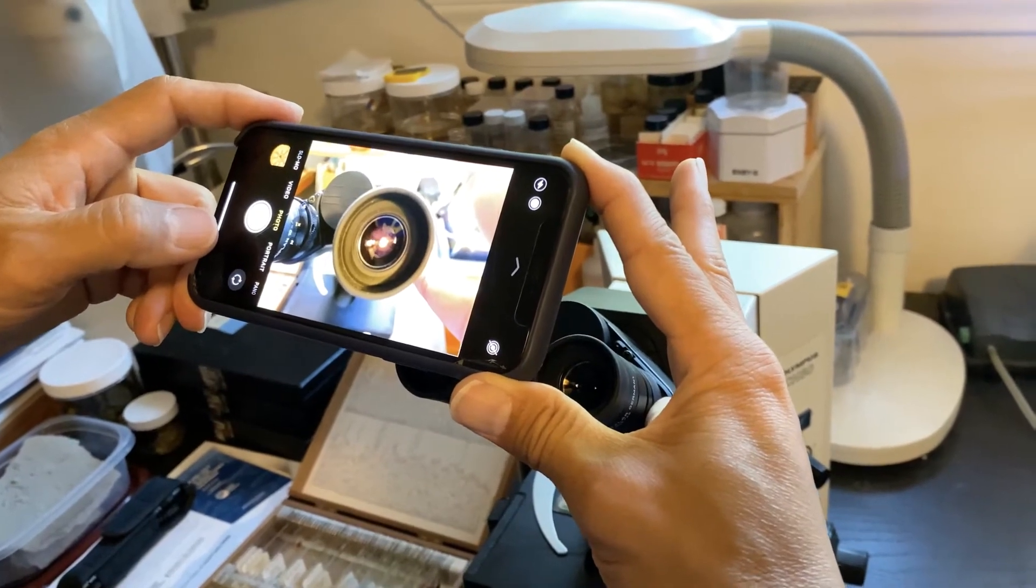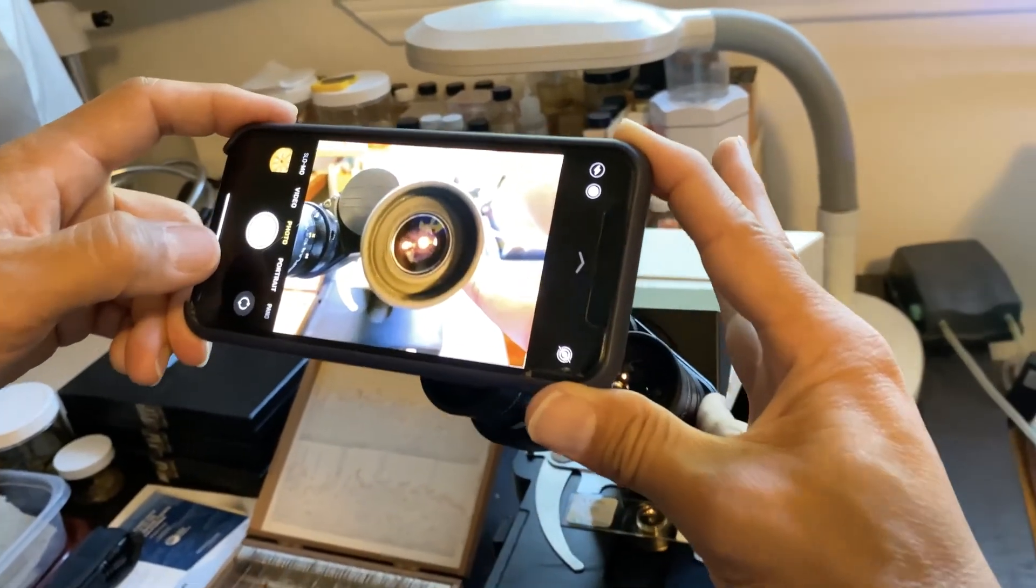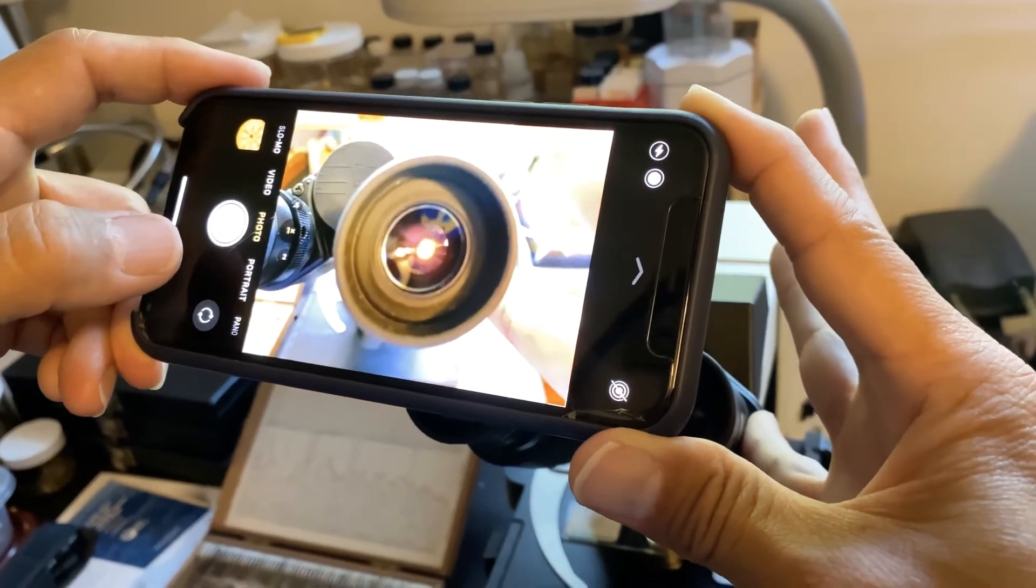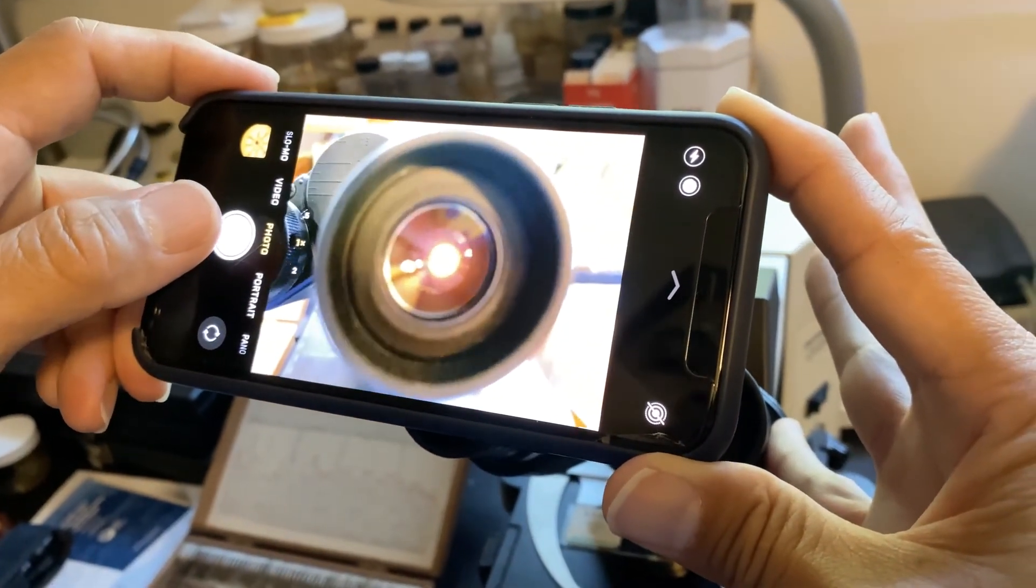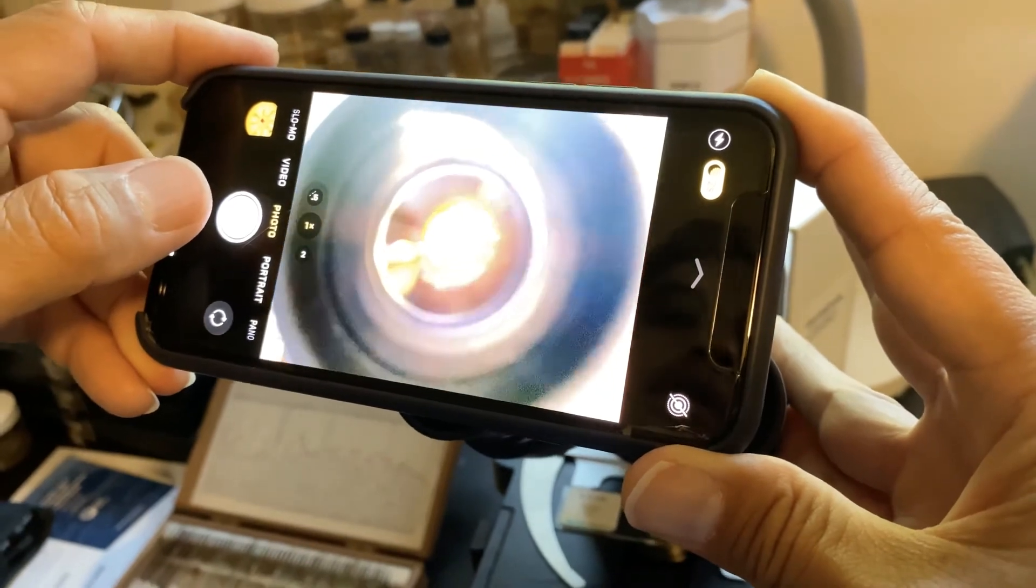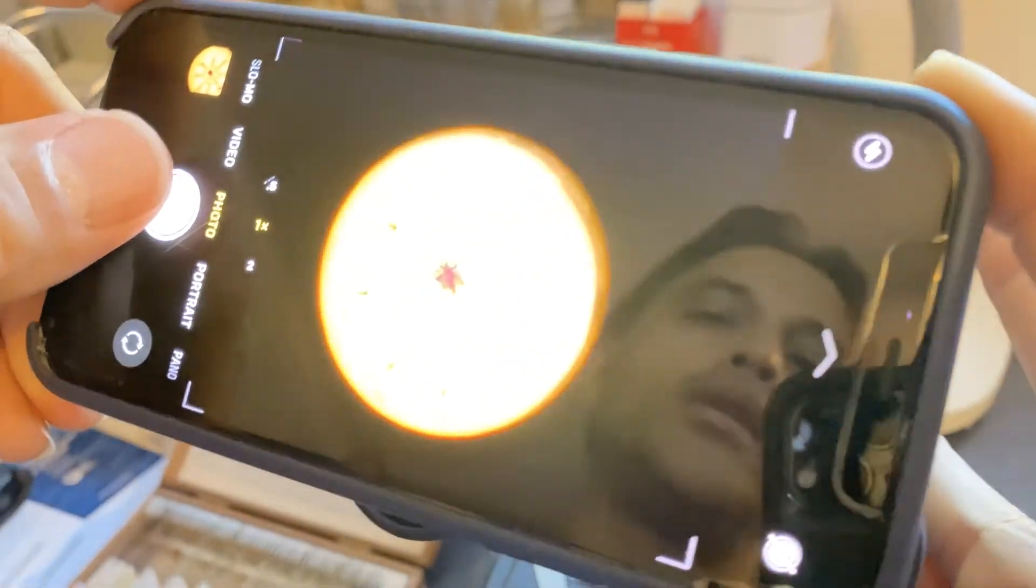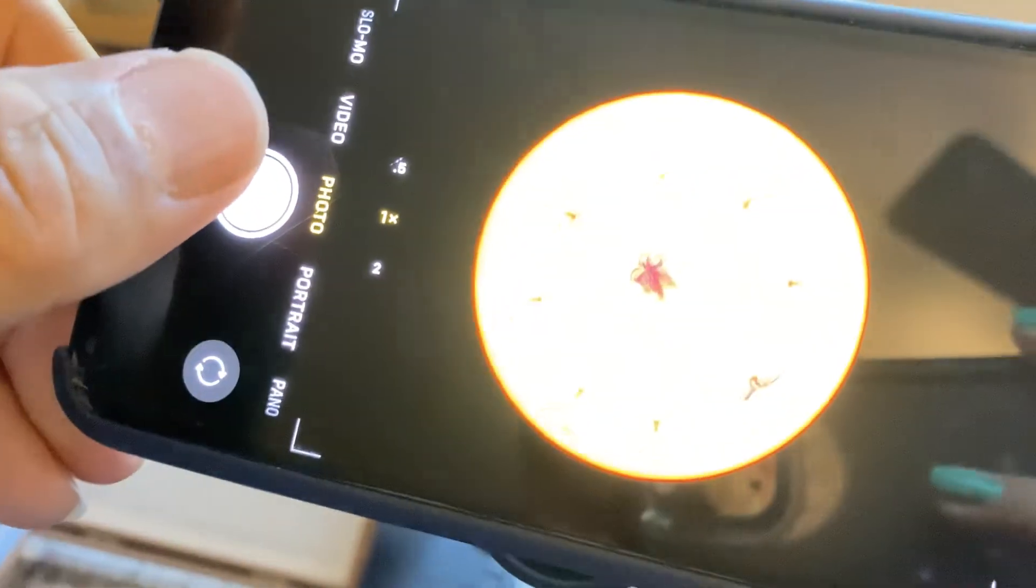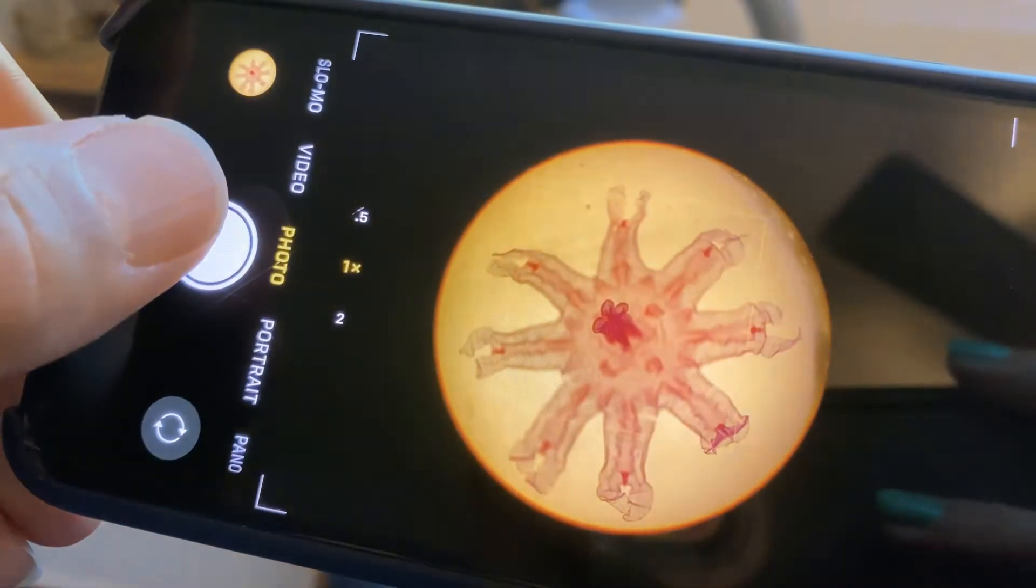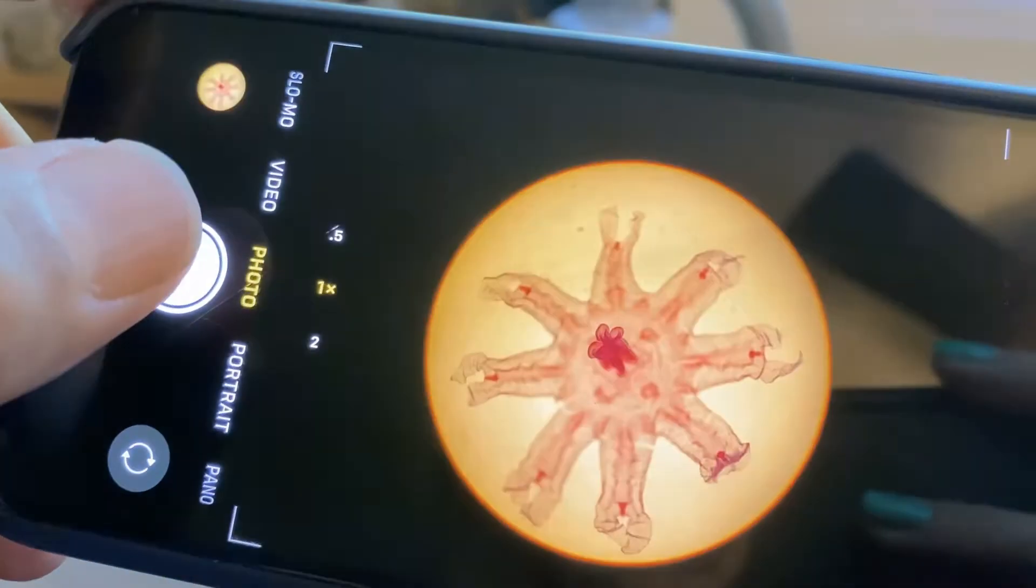I'm going to start to move my phone closer to the eyepiece and try and keep that light centered. And eventually what will happen is it will occupy the entire frame like that, and then I can photograph it. There you go.